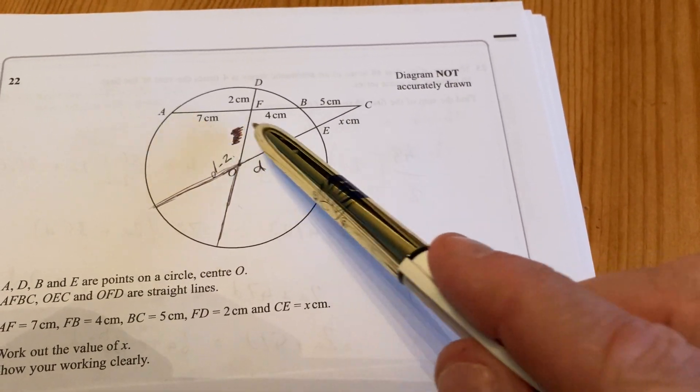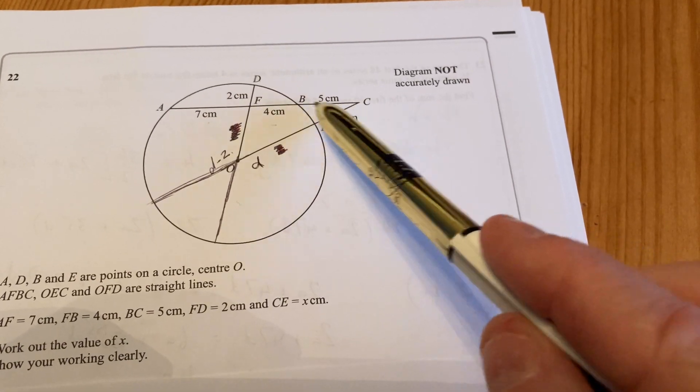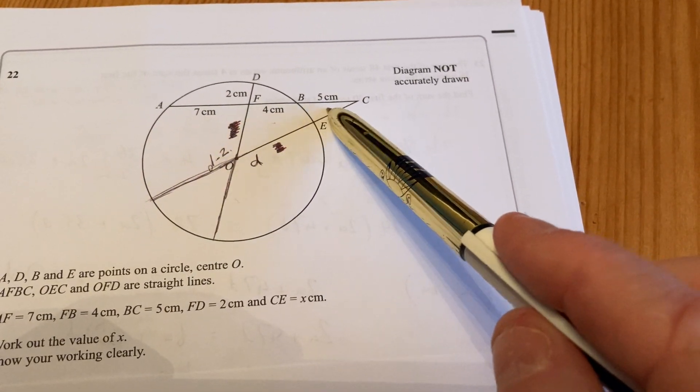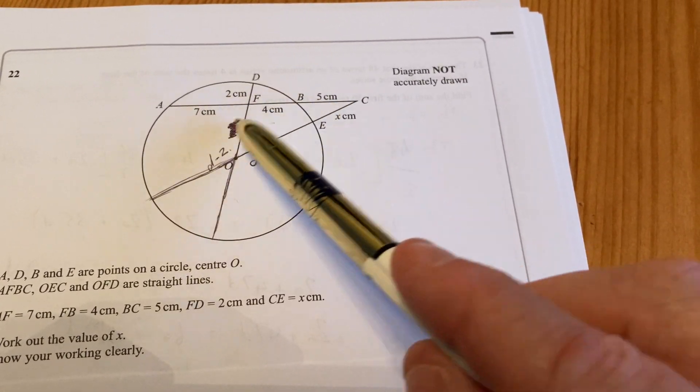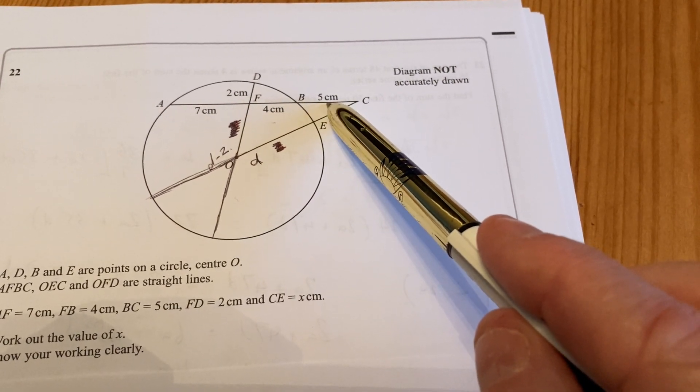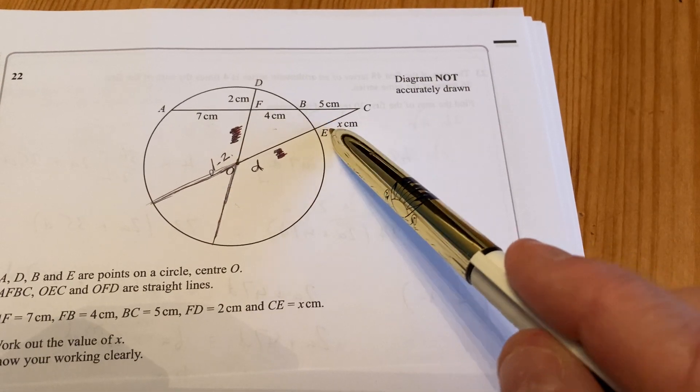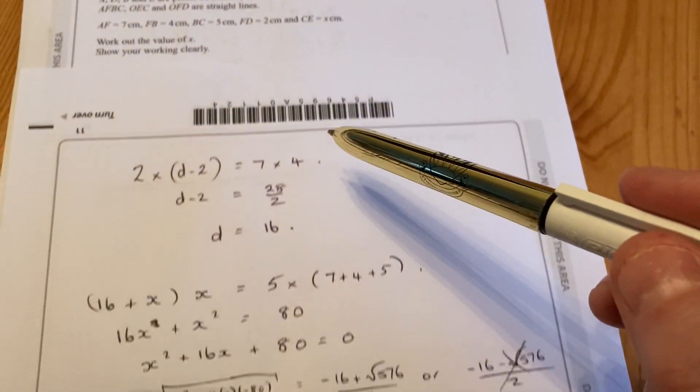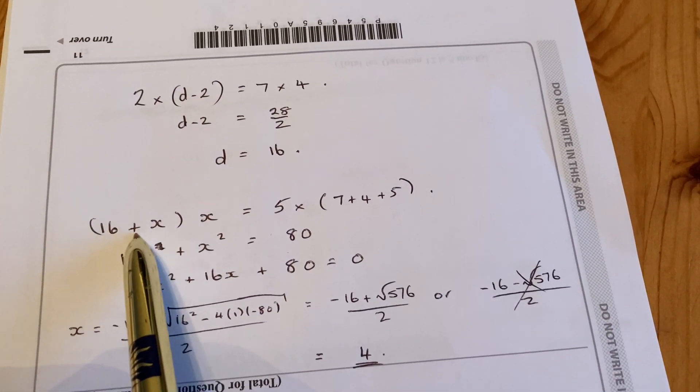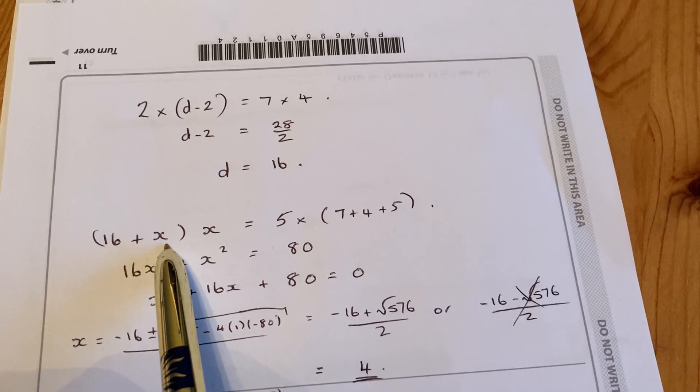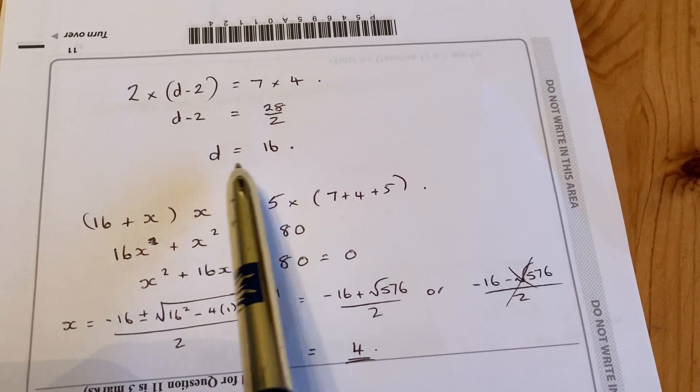So the length of this line is 7 add 4 add 5, which is 16 all together. 16 all together times by the bit outside 5 has to be equal to all of this bit D plus x times the bit outside x. So you set up the equation, look, 16 plus x is the whole of that diameter because D is 16.